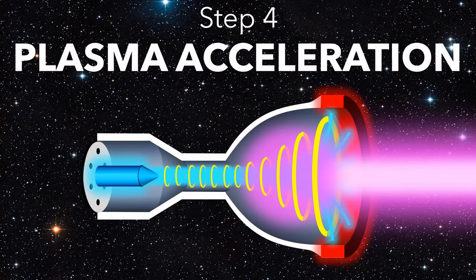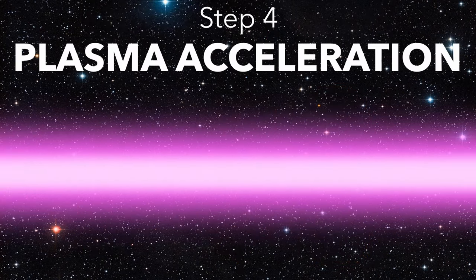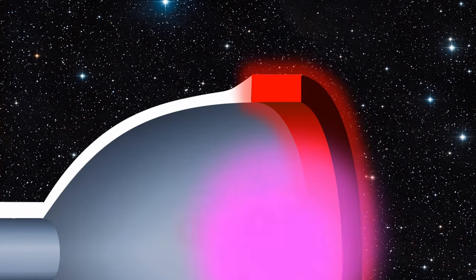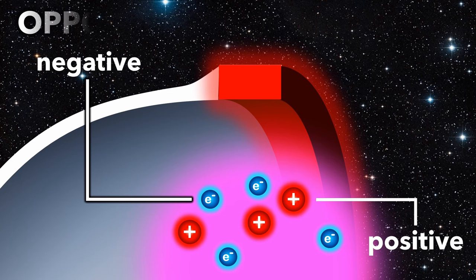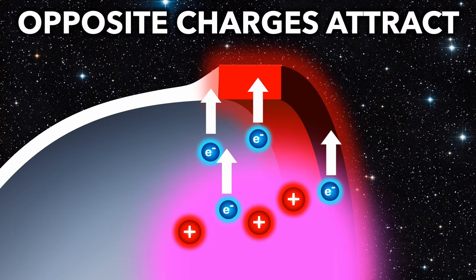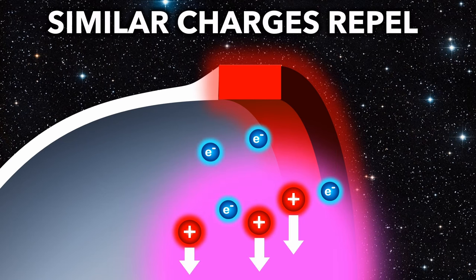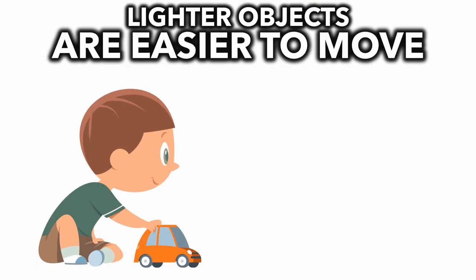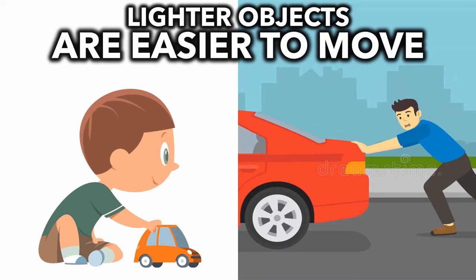And this takes us to our final step, plasma acceleration. The plasma moves into the nozzle and reaches the anode. The plasma is a soup of protons and electrons. The electrons are attracted to the anode and move toward it. The protons are repelled, but don't move, because the protons are much heavier than the electrons. It's like pushing a toy car versus pushing an actual car.